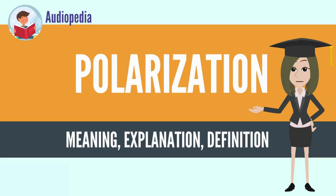Polarized light can be produced by passing unpolarized light through a polarizing filter, which allows waves of only one polarization to pass through. The most common optical materials such as glass are isotropic and do not affect the polarization of light passing through them.